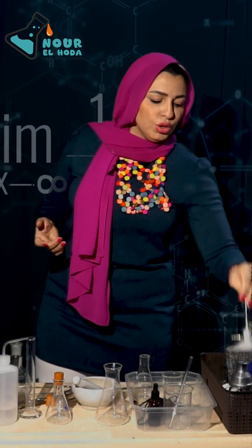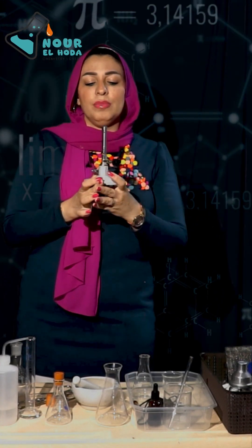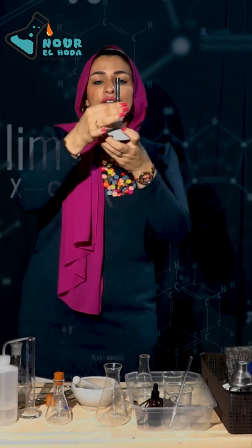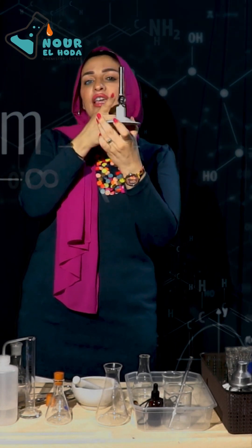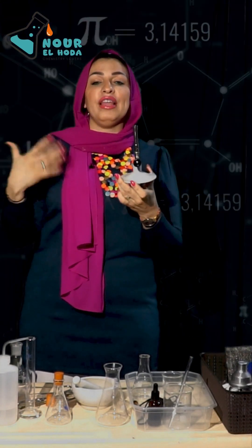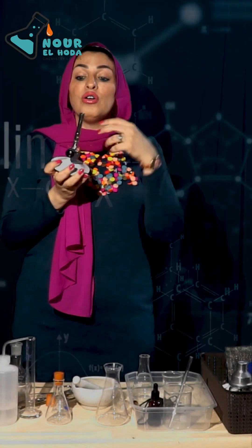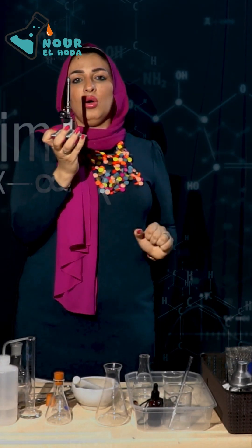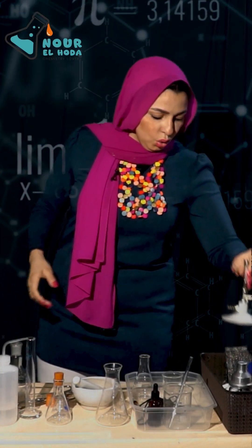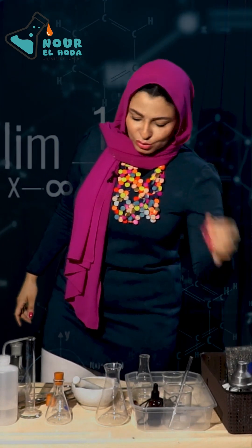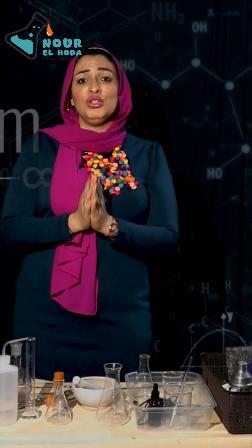The Bunsen burner has an air hole. If you want a stronger, larger flame, open the air hole. If you want a smaller flame, close the air hole.